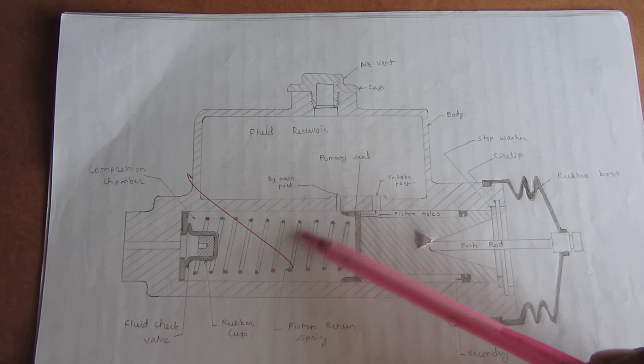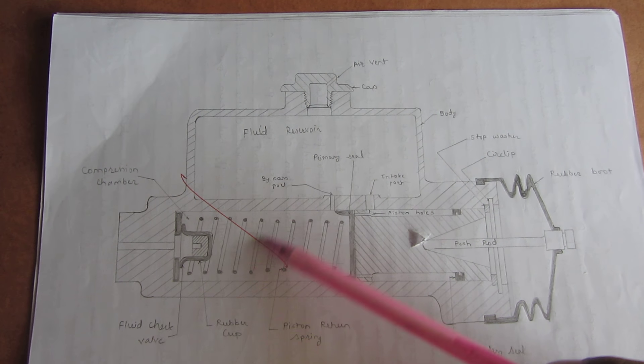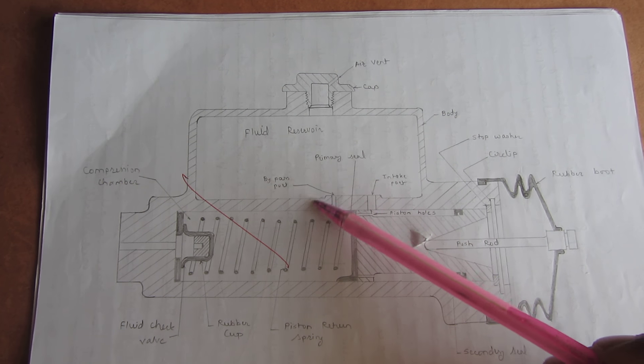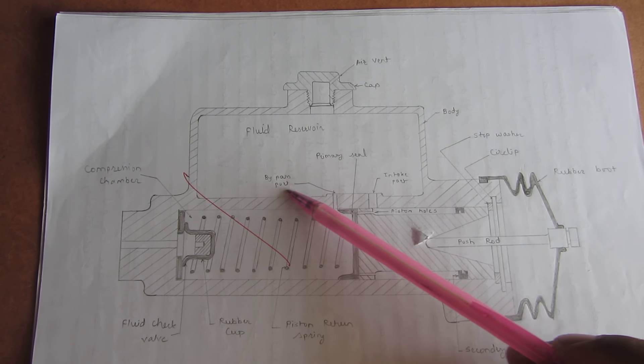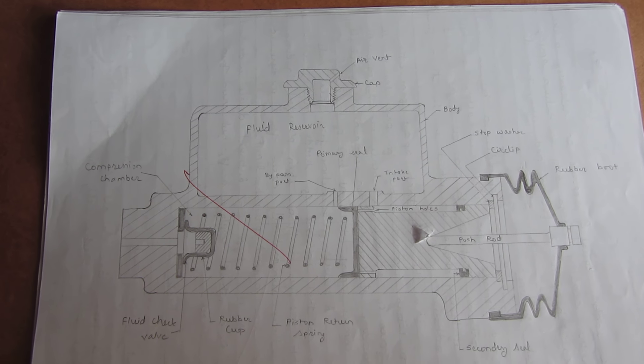When the fluid from brake lines comes back automatically, excessive fluid goes back to the reservoir with the help of this bypass port. This is how this system works.